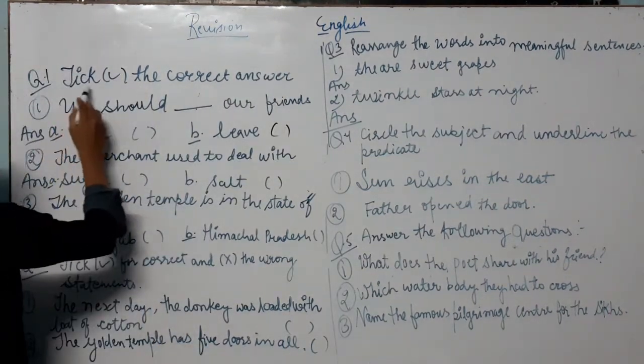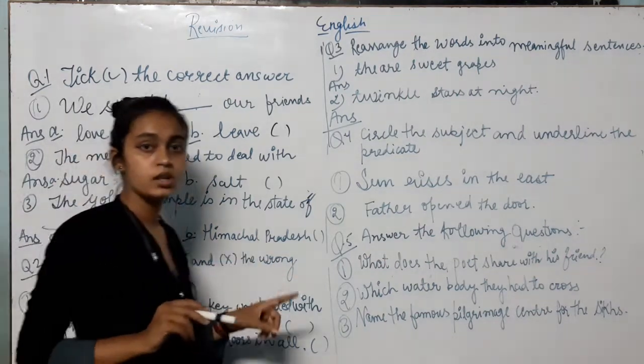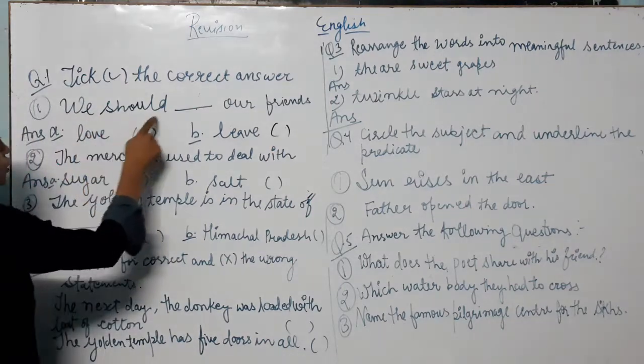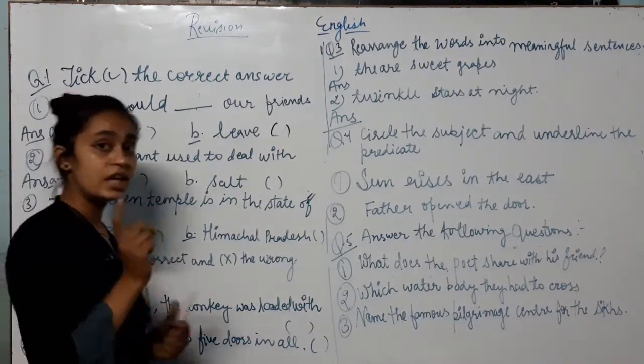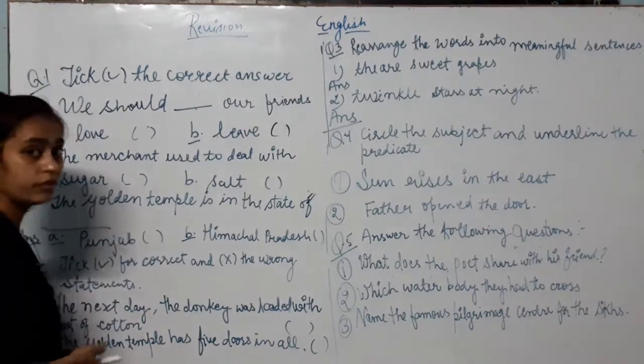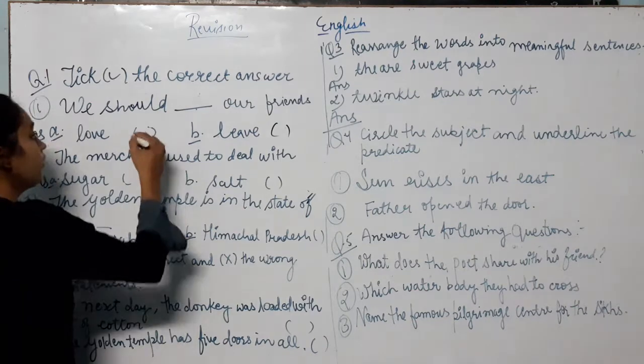So first question is tick the correct answer. There will be options. You have to tick on the right answer. First, we should dash our friends. In chapter one, we read about it. What we should with our friends? We should love or leave. Of course, we should love our friends.